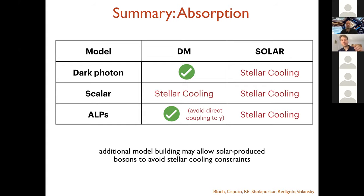So to summarize the absorption part, the dark photon dark matter works well. The solar dark photon is constrained by stellar cooling. I also mentioned the scalar dark matter being disfavored by stellar cooling. And an ALP can work, but you need to avoid any direct coupling to photons. Now there's additional model building that we can do to try to avoid the stellar cooling constraints. But this is a quick summary.